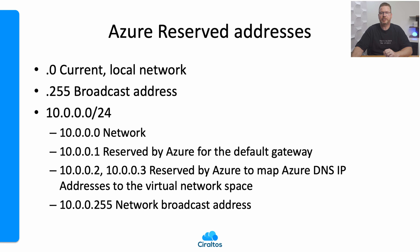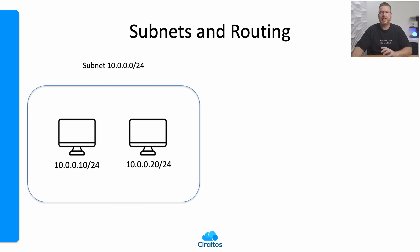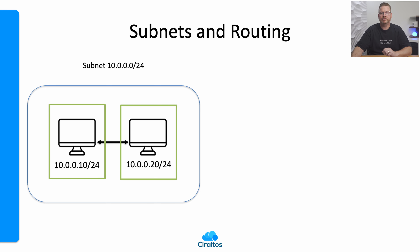So why can't clients communicate if we use the same subnet in different VNets? Let's look at how clients communicate inside a subnet. Say a client with IP address 10.0.0.10/24 needs to communicate with client 10.0.0.20/24 on the same subnet. The client sees the computer is on the same 10.0.0 subnet, uses the broadcast address to reach out to all clients and find the one with the IP it's looking for, and once found, they initiate communication.